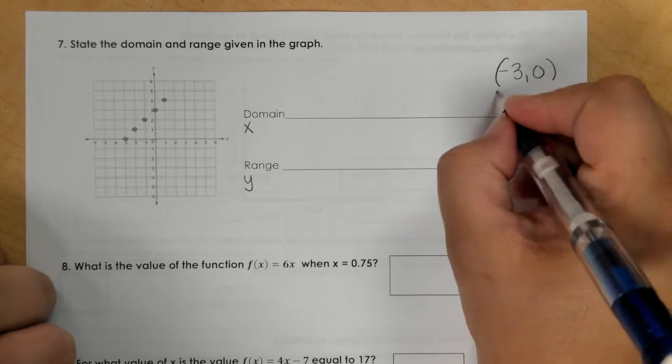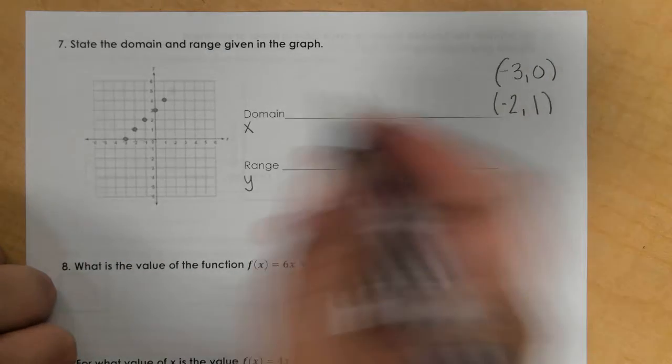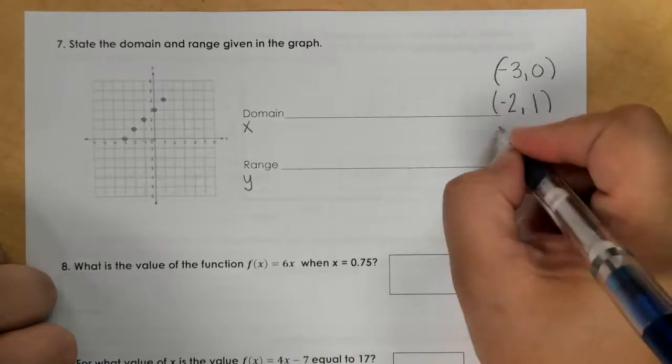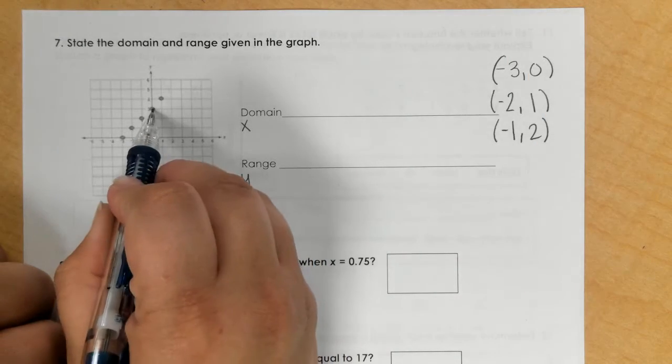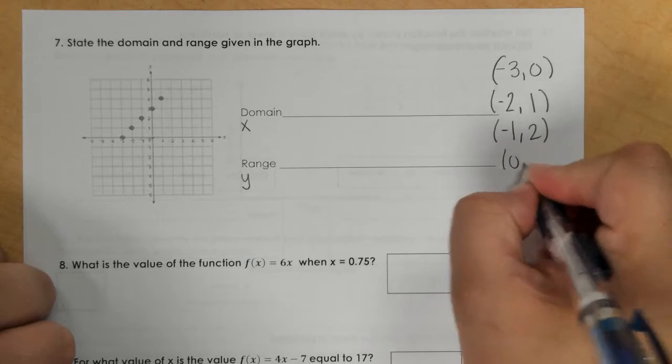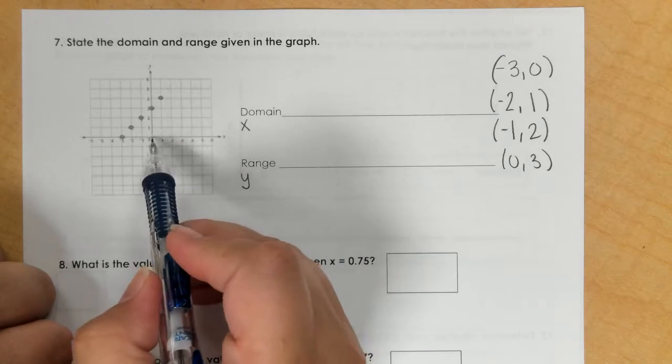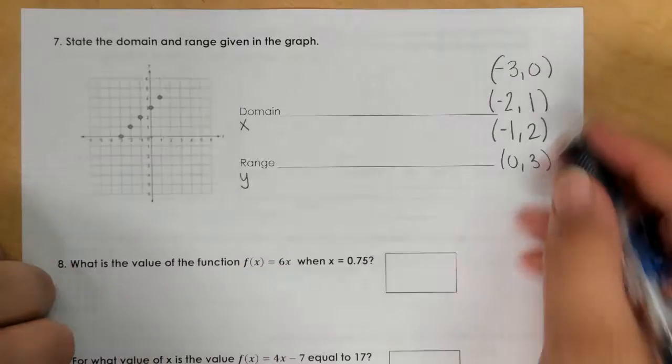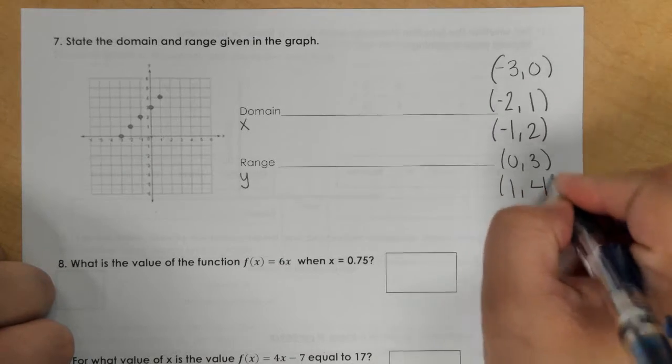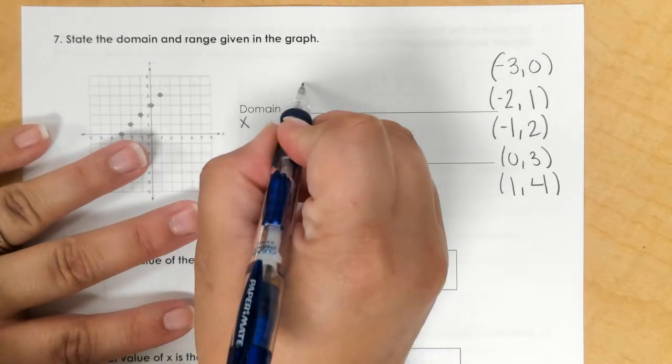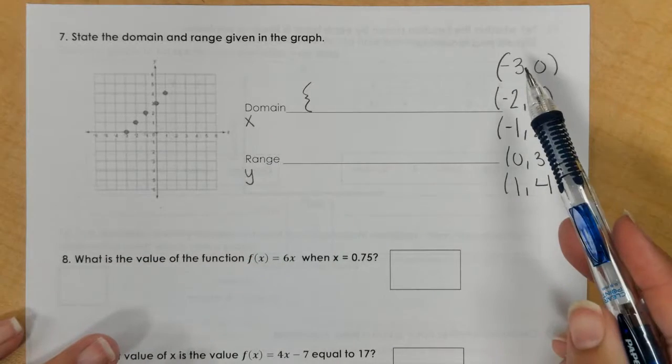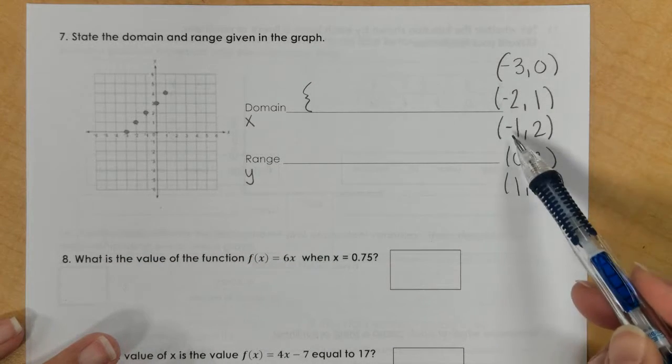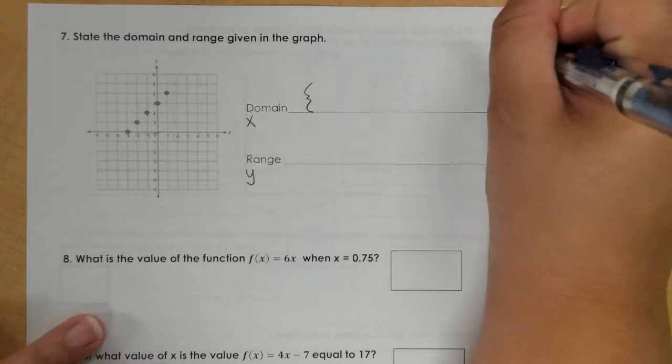Negative 2, 1. Negative 1, 2. Stay at 0, go up to 3. And then we go over 1, up 4. Okay, so for the domain we write that in set notation with braces: negative 3, negative 2, negative 1, 0, 1. So we have the x's there.